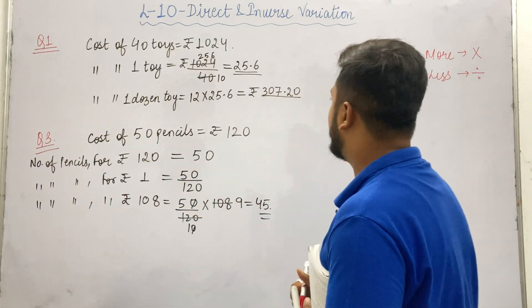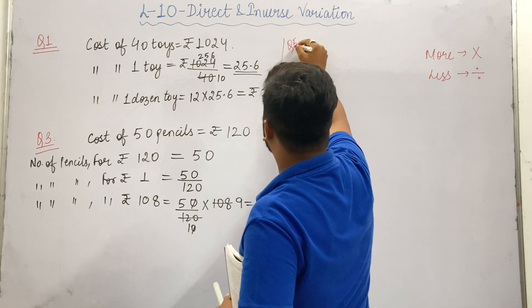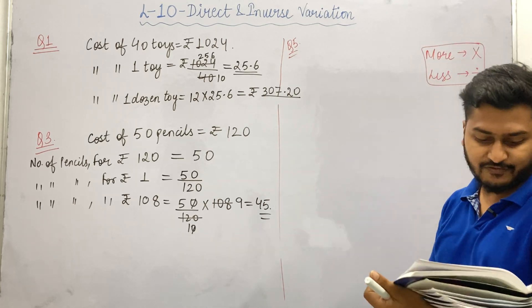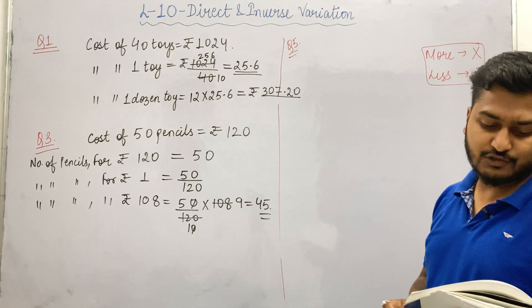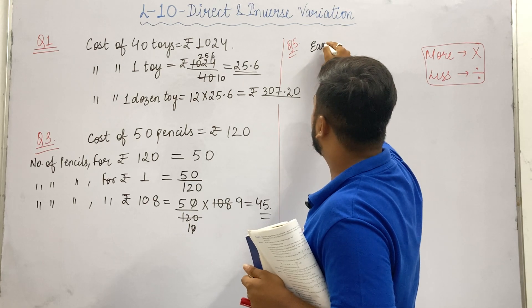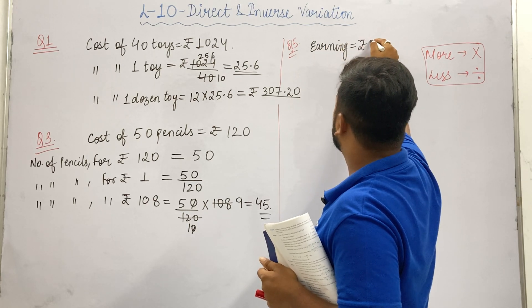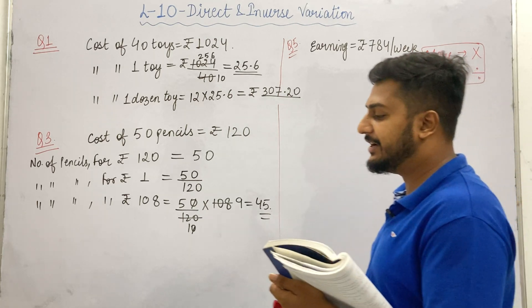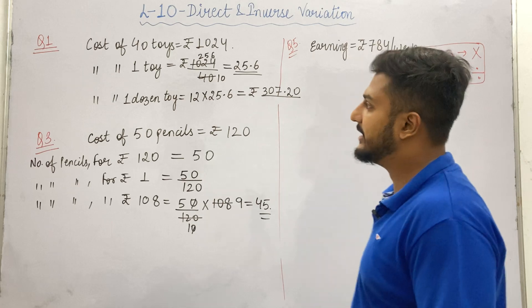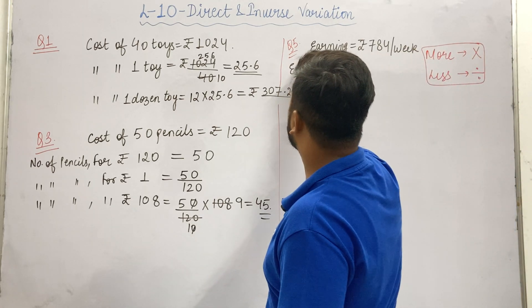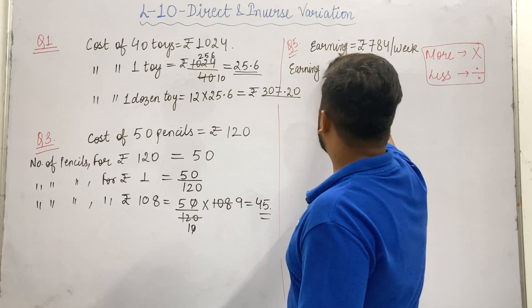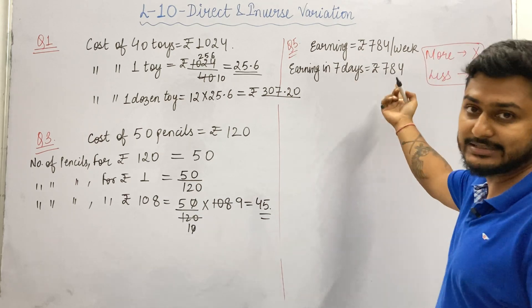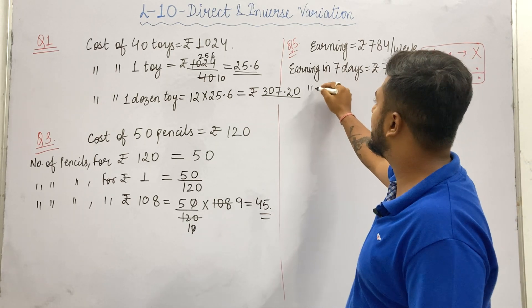Coming to question number 5: if a laborer earns Rs. 784 per week, how much will he earn in 15 days? So earning in 7 days is equal to Rs. 784. We first find earning in 1 day by dividing 784 by 7.